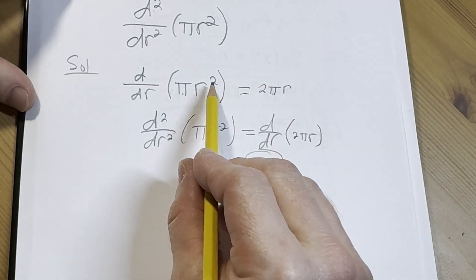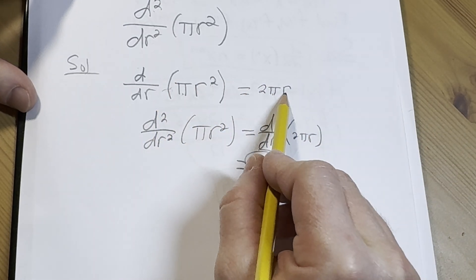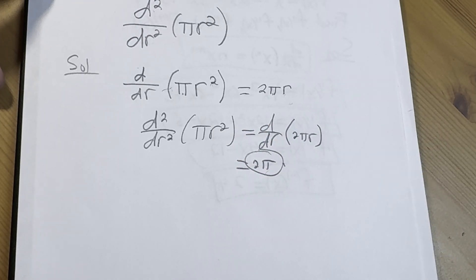So pretty simple if you realize that r is the variable here, right? You take the derivative once, you get two pi r. Take it again, the derivative of r is one, so you're just left with two pi as the final answer.